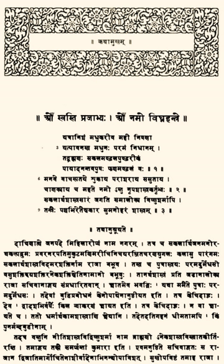Examples are: the ass in the panther's skin and the ass without heart and ears. The broken pot is similar to Aesop's The milkmaid and her pail. The gold-giving snake is similar to Aesop's The man and the serpent, by Marie de France. Other well-known stories include The tortoise and the geese, and The tiger, the brahman and the jackal. Similar animal fables are found in most cultures of the world, although some folklorists view India as the prime source. The French fabulist Jean de la Fontaine acknowledged his indebtedness to the work in the introduction to his second fables.